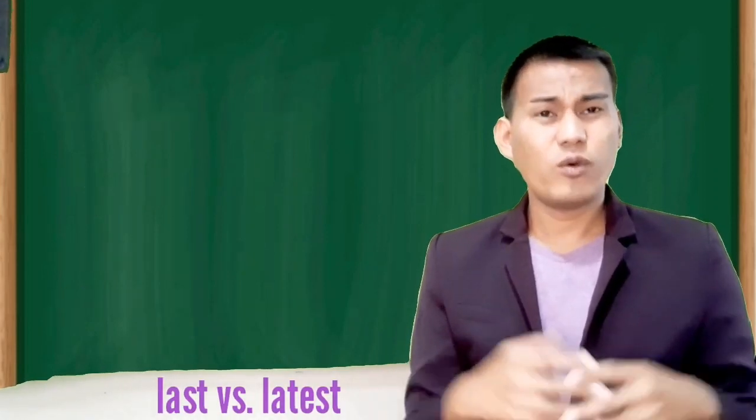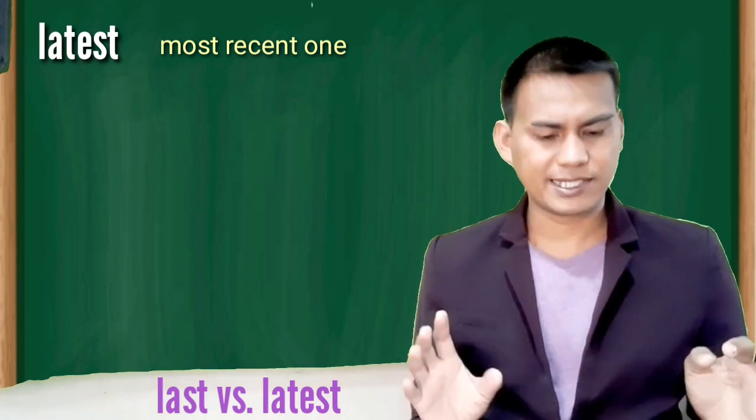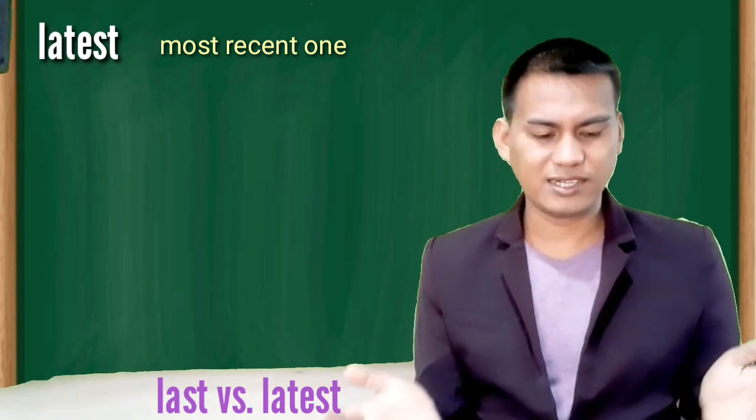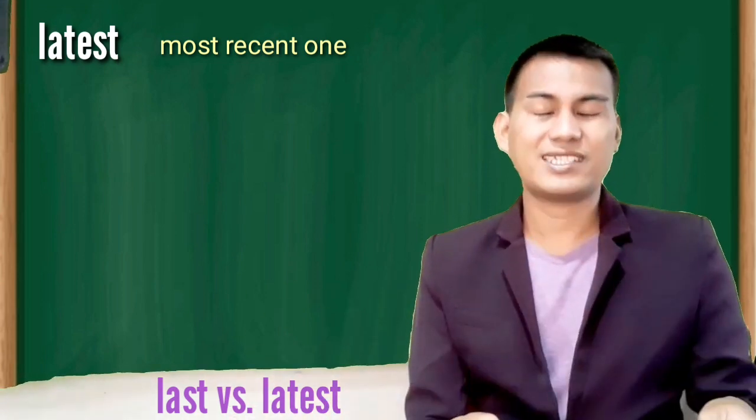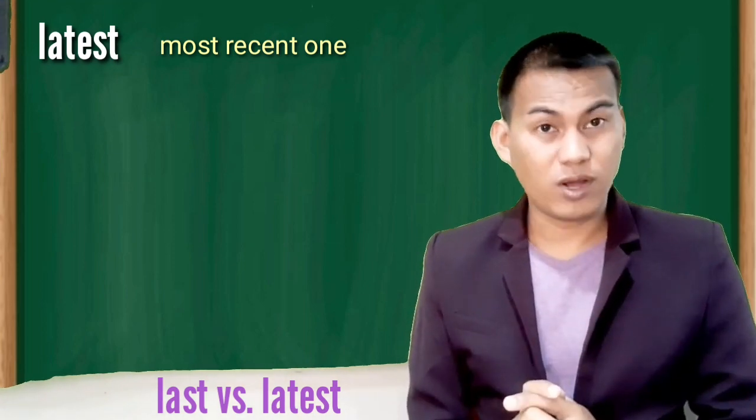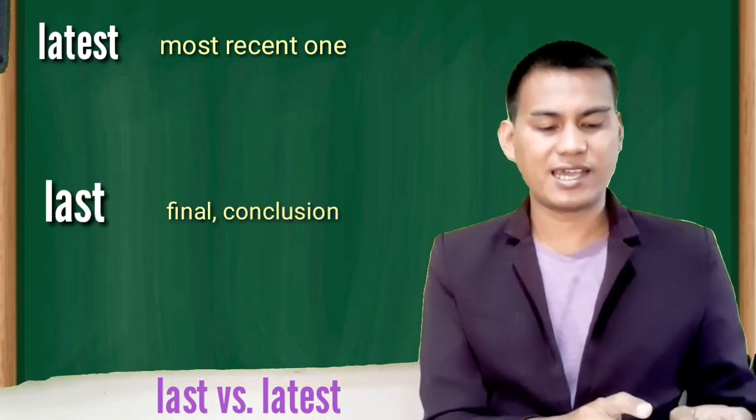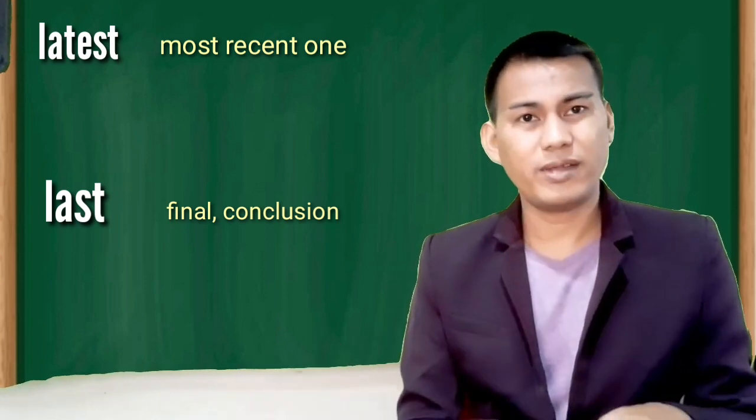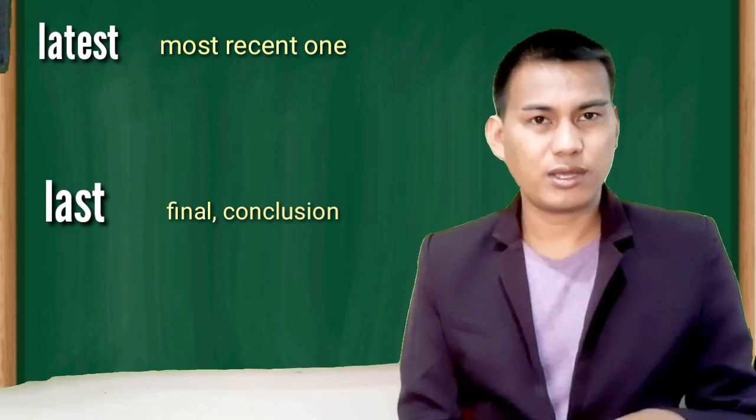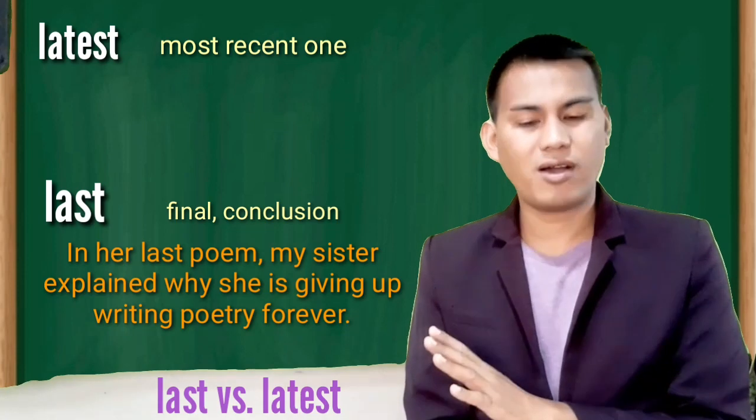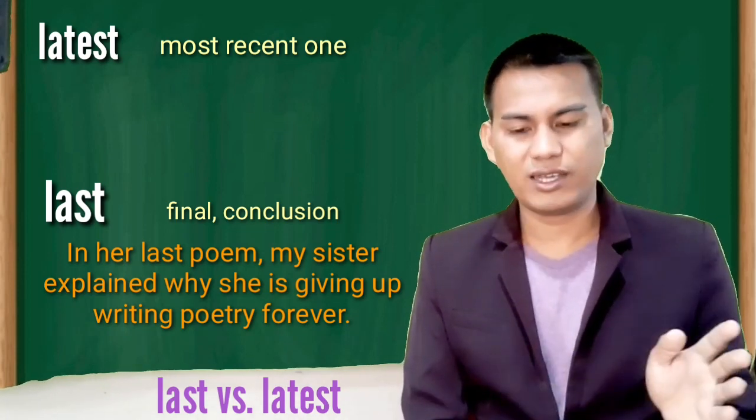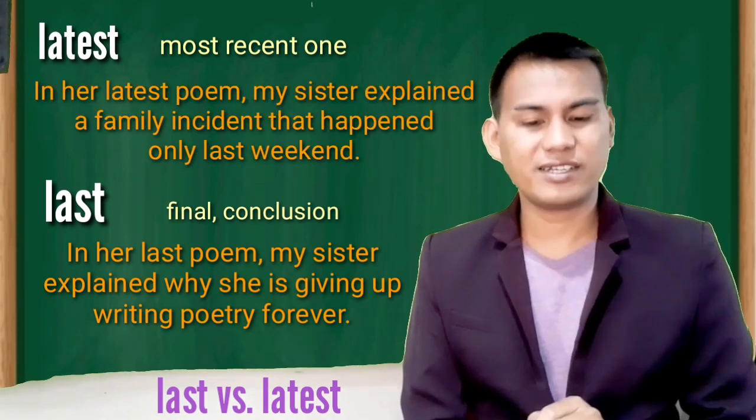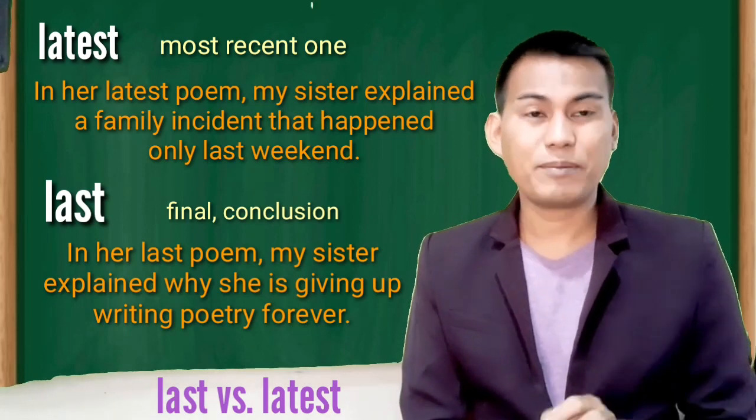Last versus latest. When you are speaking or writing of an author and say, this is her latest book, you're understood to mean that she has written some other books and that this is the most recent one. If, however, you had said this is her last book, she has written many books and then probably this is the last book that she will ever write. In her last poem, my sister explained why she is giving up writing poetry forever. In her latest poem, my sister explained a family incident that happened only last weekend.